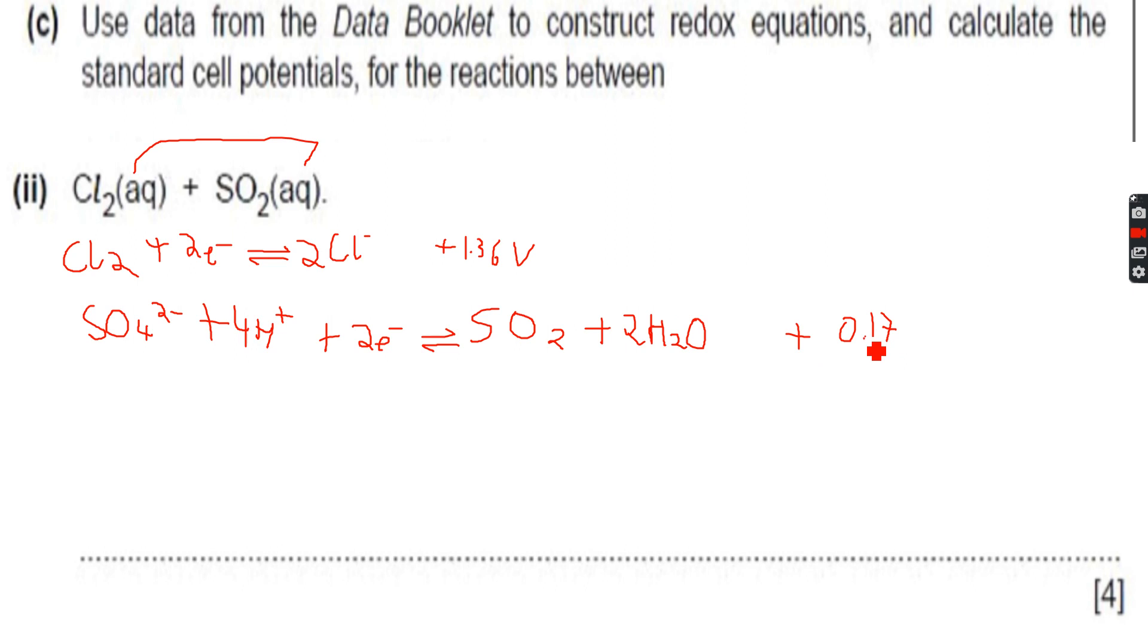As plus 0.17 is less than plus 1.36, we will have to invert the second equation. So this will become SO₂ plus 2H₂O giving us SO₄²⁻ plus 4H⁺ plus 2 electrons. This becomes minus 0.17 and we will add minus 0.17 and 1.36, so 1.36 minus 0.17 gives us plus 1.19 volts.